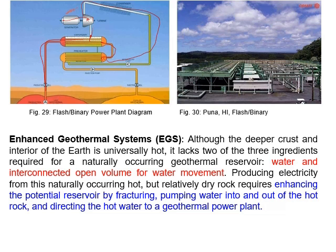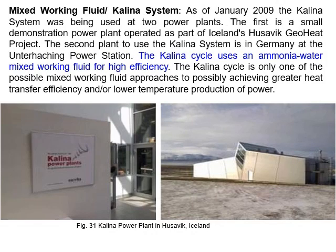In an enhanced geothermal system, we have hot rocks underground but no water. We can pump water down to the rocks to extract the heat. Sometimes water is mixed with ammonia as a working fluid. The Kalina system, invented in 2009, uses a mixture of ammonia and water together in the heat exchanger for better performance.